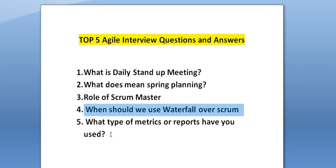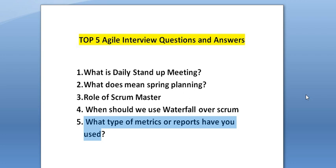The next question is: what type of metrics or reports have you used in a sprint release? Burndown and burn-up charts are standard reports that are very frequently used. Most companies also want to understand how many stories were committed versus completed per sprint, and the number of defects identified post-release to production. These burndown and burn-up charts provide a comparison and analysis of the software or product. The burndown chart displays the amount of work a team has burned through, such as hours, during the sprint.